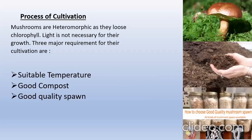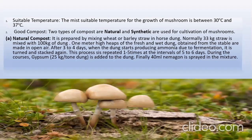Now, process of cultivation. Mushrooms are heterotrophic as they lack chlorophyll, so light is not necessary for their growth. Three major requirements for their cultivation are suitable temperature, good compost, and good quality spawn. The most suitable temperature for the growth of mushroom is between 30°C to 37°C, and the optimum season is from April to September.